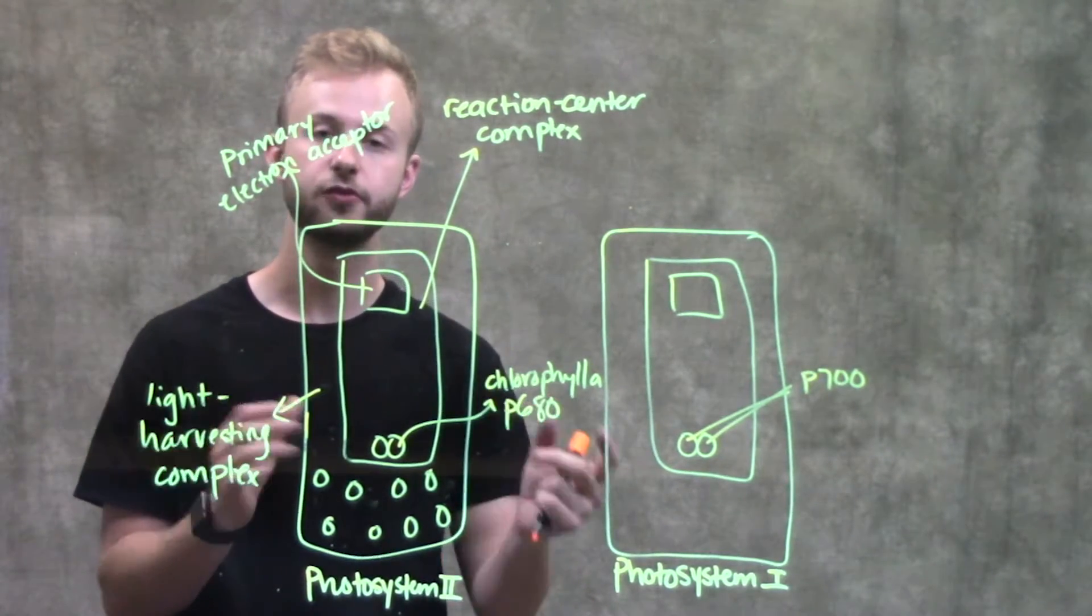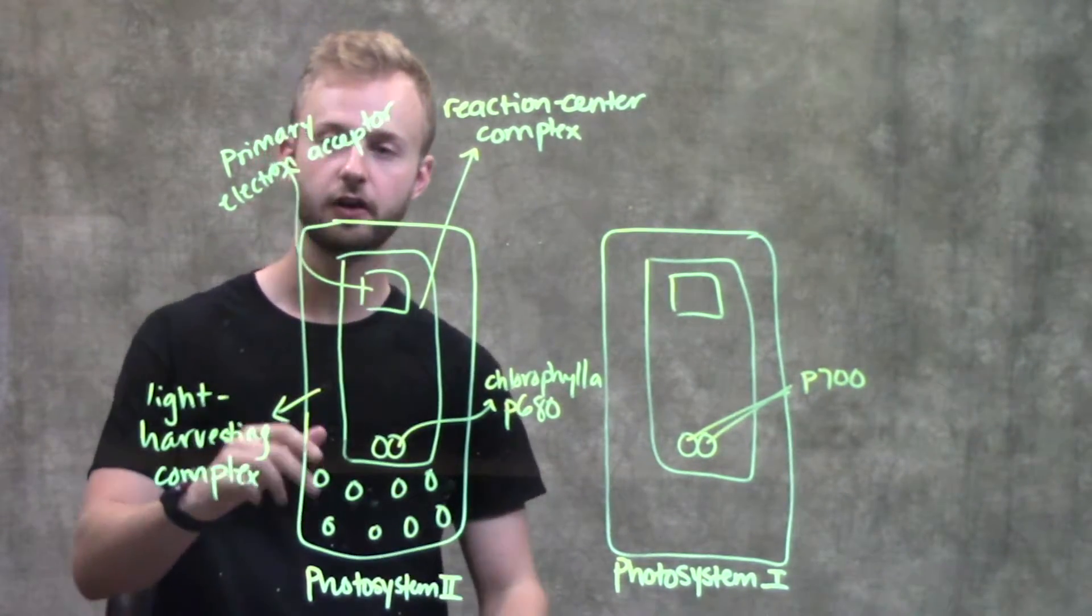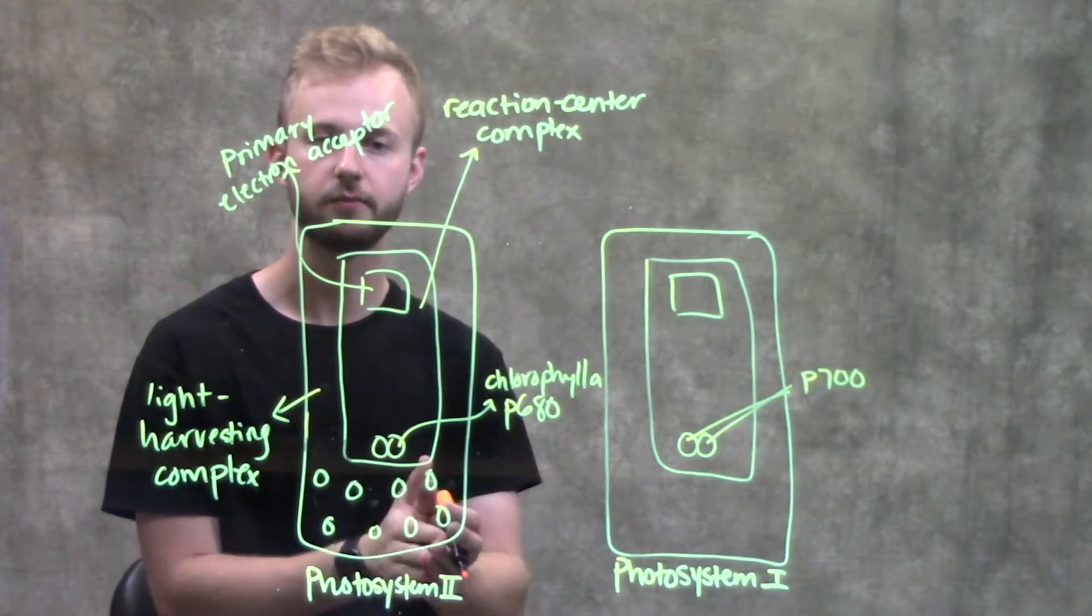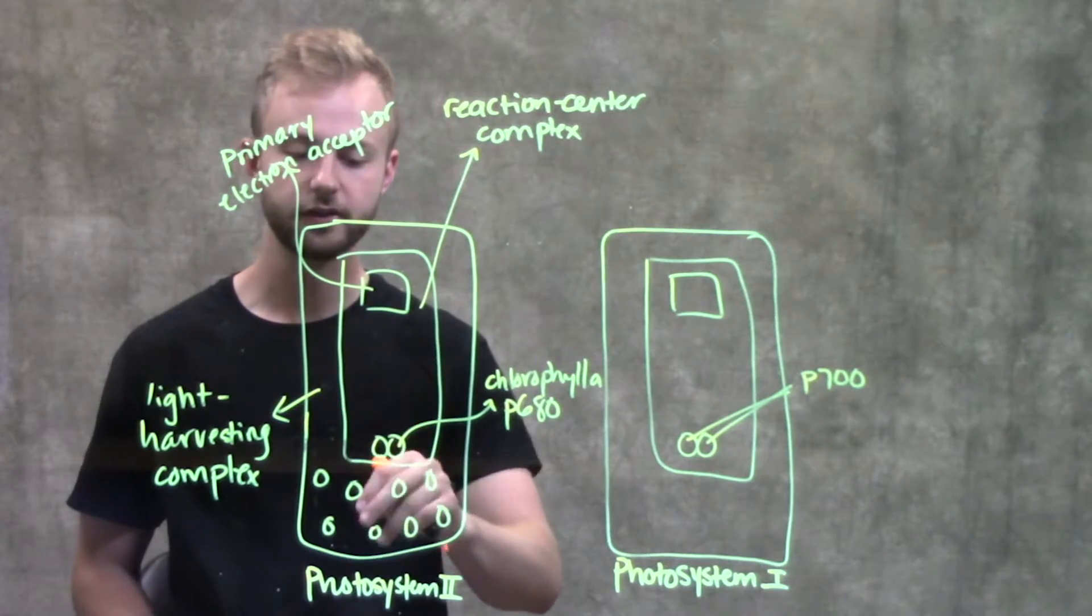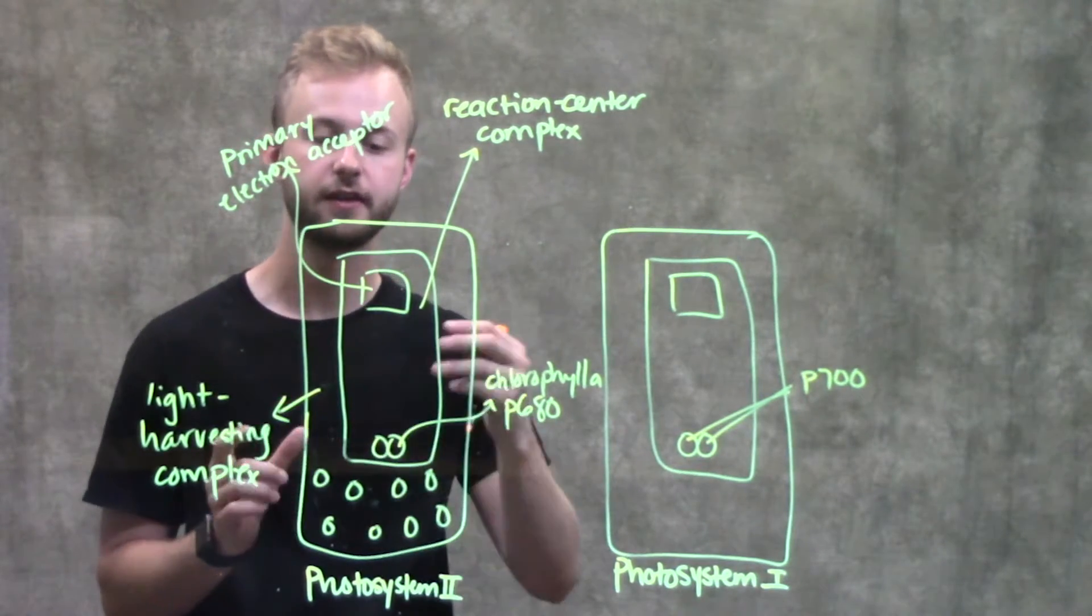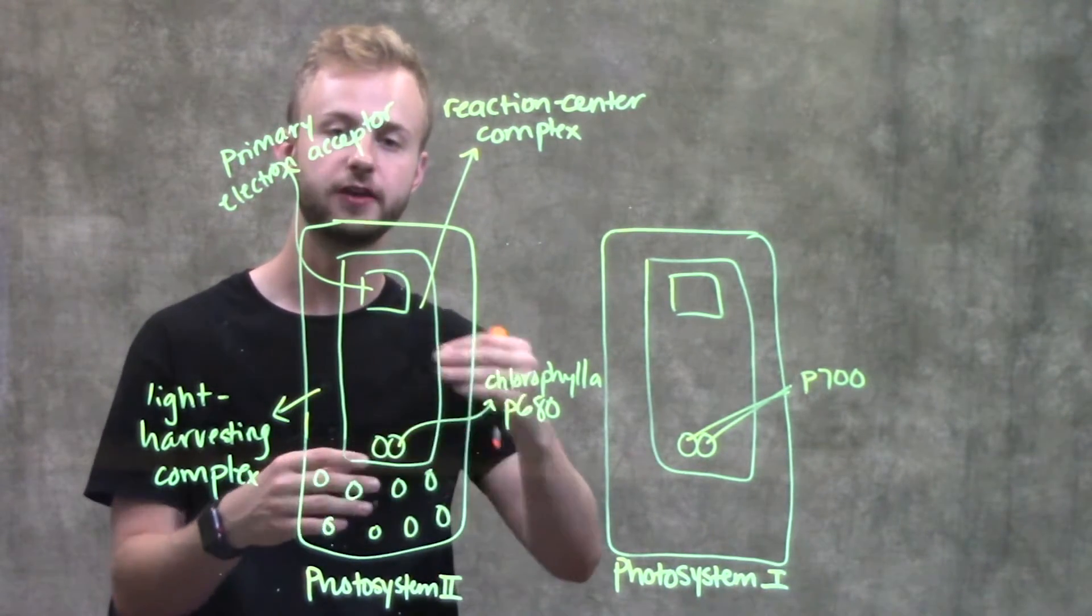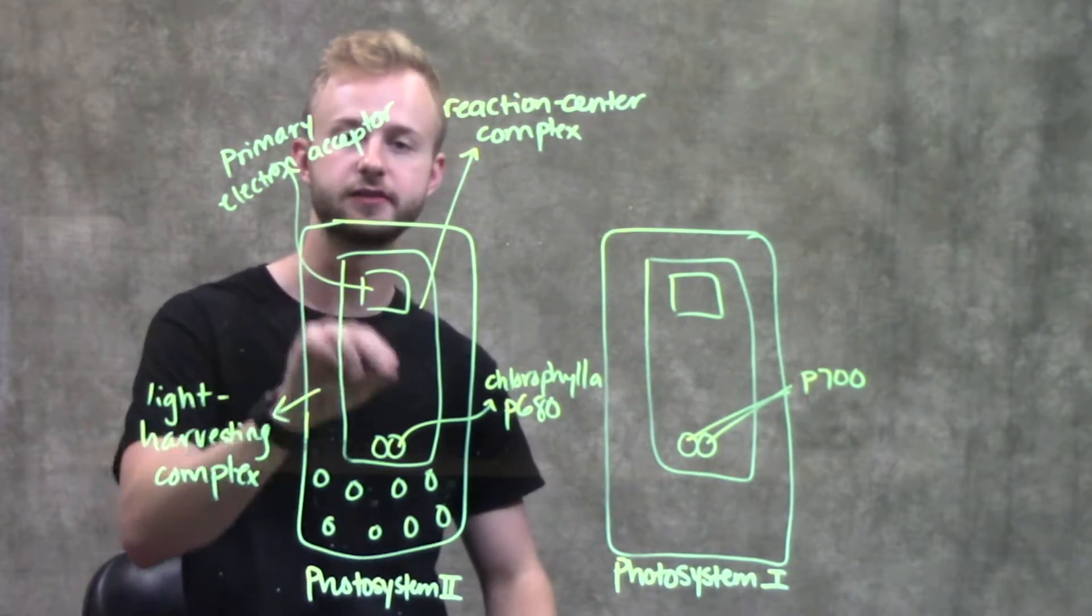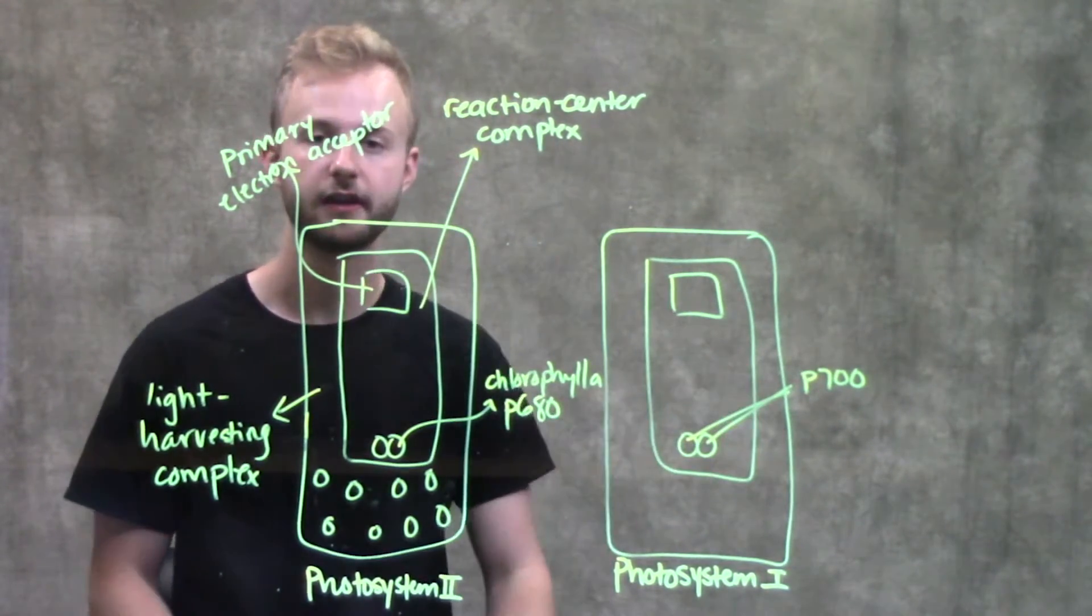To review, photosystems have two main compartments: the light harvesting complex and the reaction center complex. In the light harvesting complex is where they capture all that energy and then they pass it on to the reaction center to actually excite these electrons and then give them to the primary electron acceptor. From there, they can move on to the next photosystem.